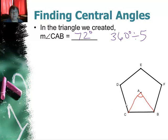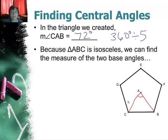Now because ABC is isosceles we can find the measure of the two base angles. So this angle right here will be congruent to this angle right here. Always. You're always creating an isosceles triangle because the radii are congruent.